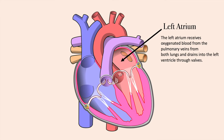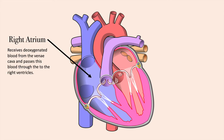The left atrium receives oxygenated blood from the pulmonary veins from both lungs and drains into the left ventricle through valves. Don't get confused by the diagrams — when the heart is shown in a diagram, the left side of the heart appears on the right-hand side of the diagram, so it's always going to be labelled the opposite way.